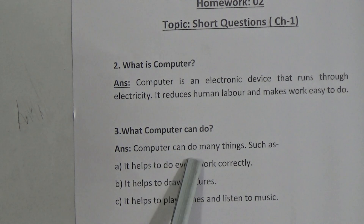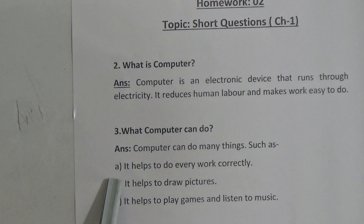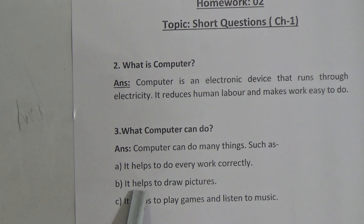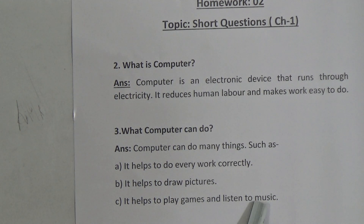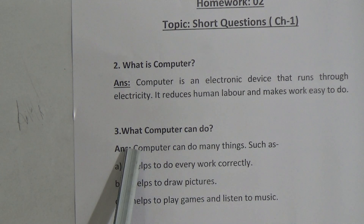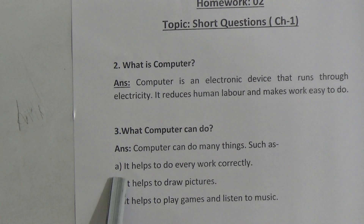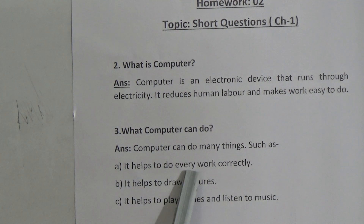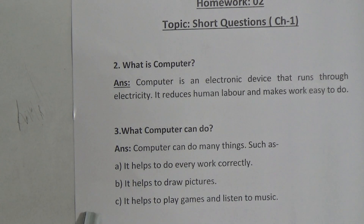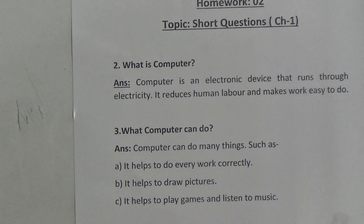Question number 3: What can a computer do? A computer can do many things, such as: (a) it helps to do every work correctly, (b) it helps to draw pictures, (c) it helps to play games and listen to music.